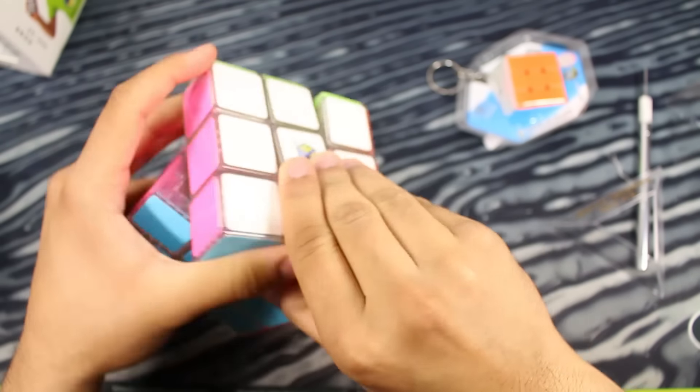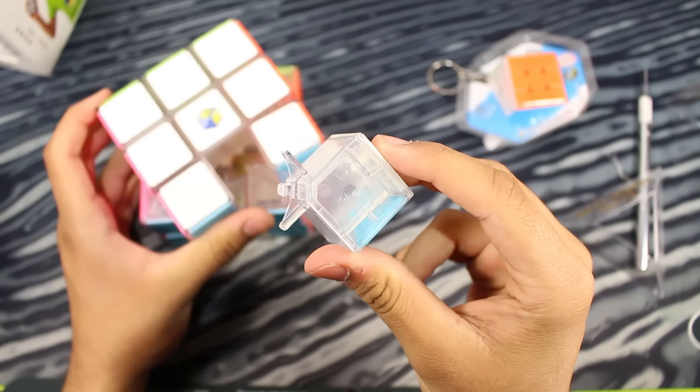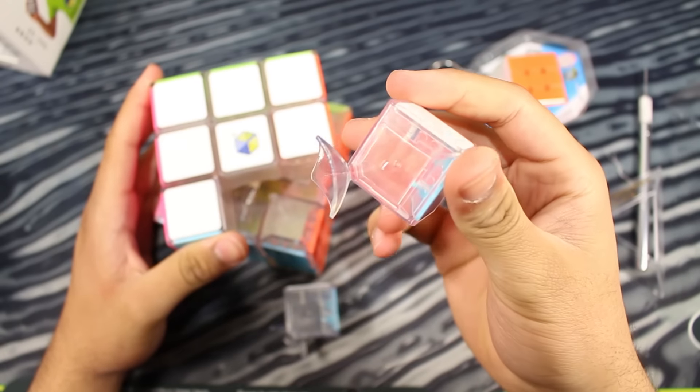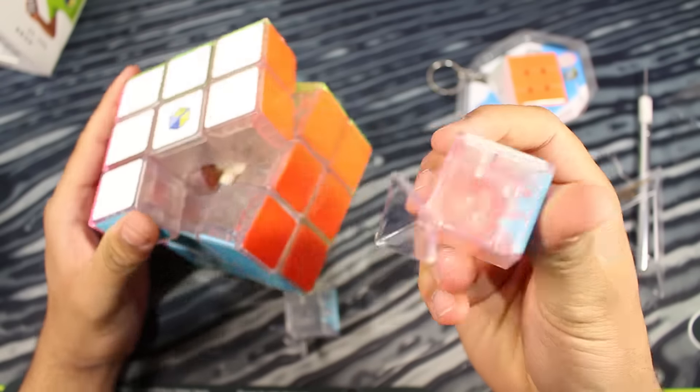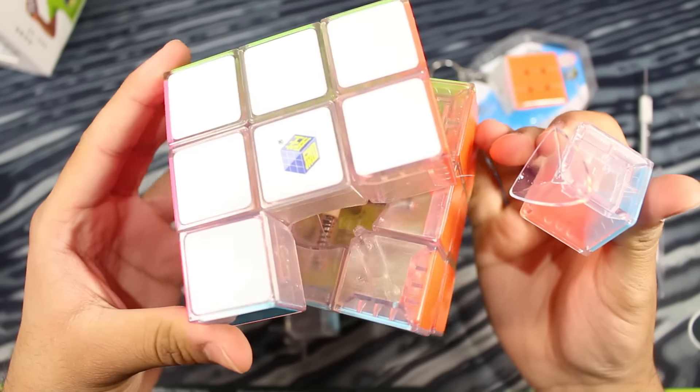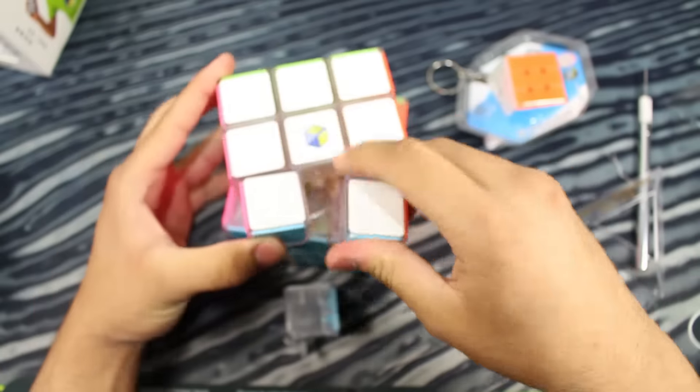So let's just take a look at the internals. Yeah, it looks like an actual speed cube design. That's why it turns fairly well. Also, this is my first transparent cube. Transparent cubes have been out for a while, but I've never had one. And it looks very cool to take a look at the internal mechanism, like the screws and everything. It looks pretty cool actually.